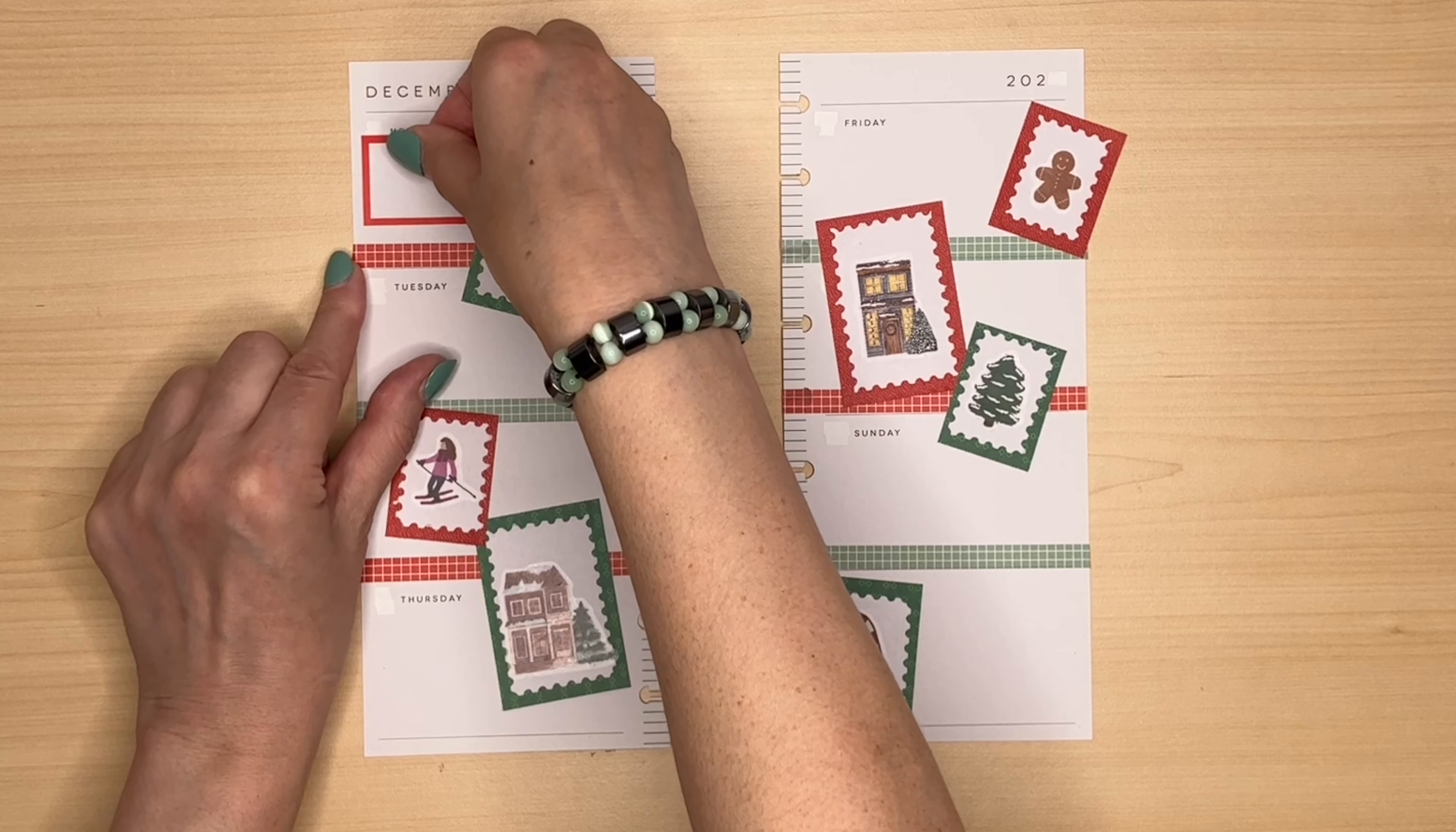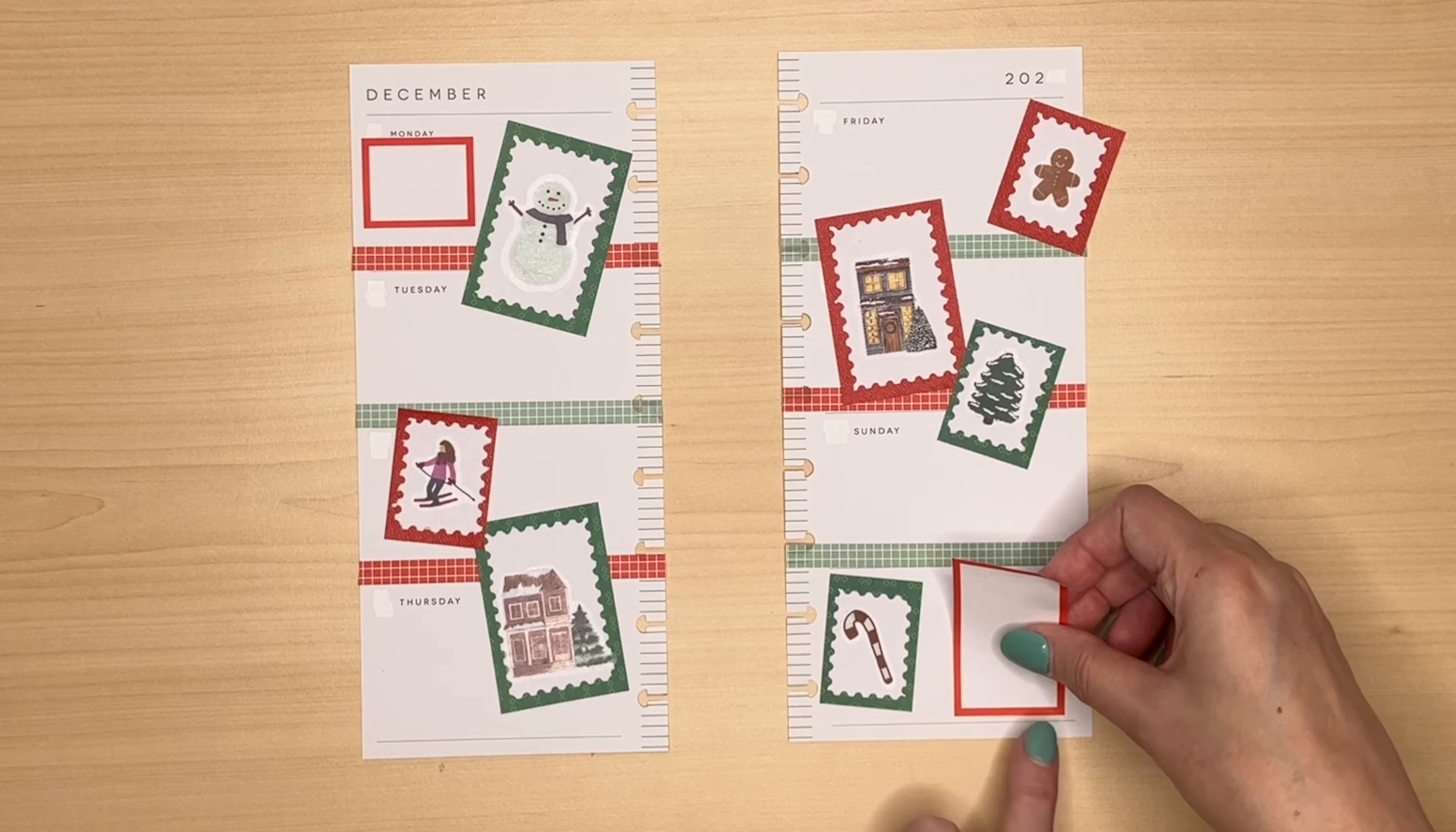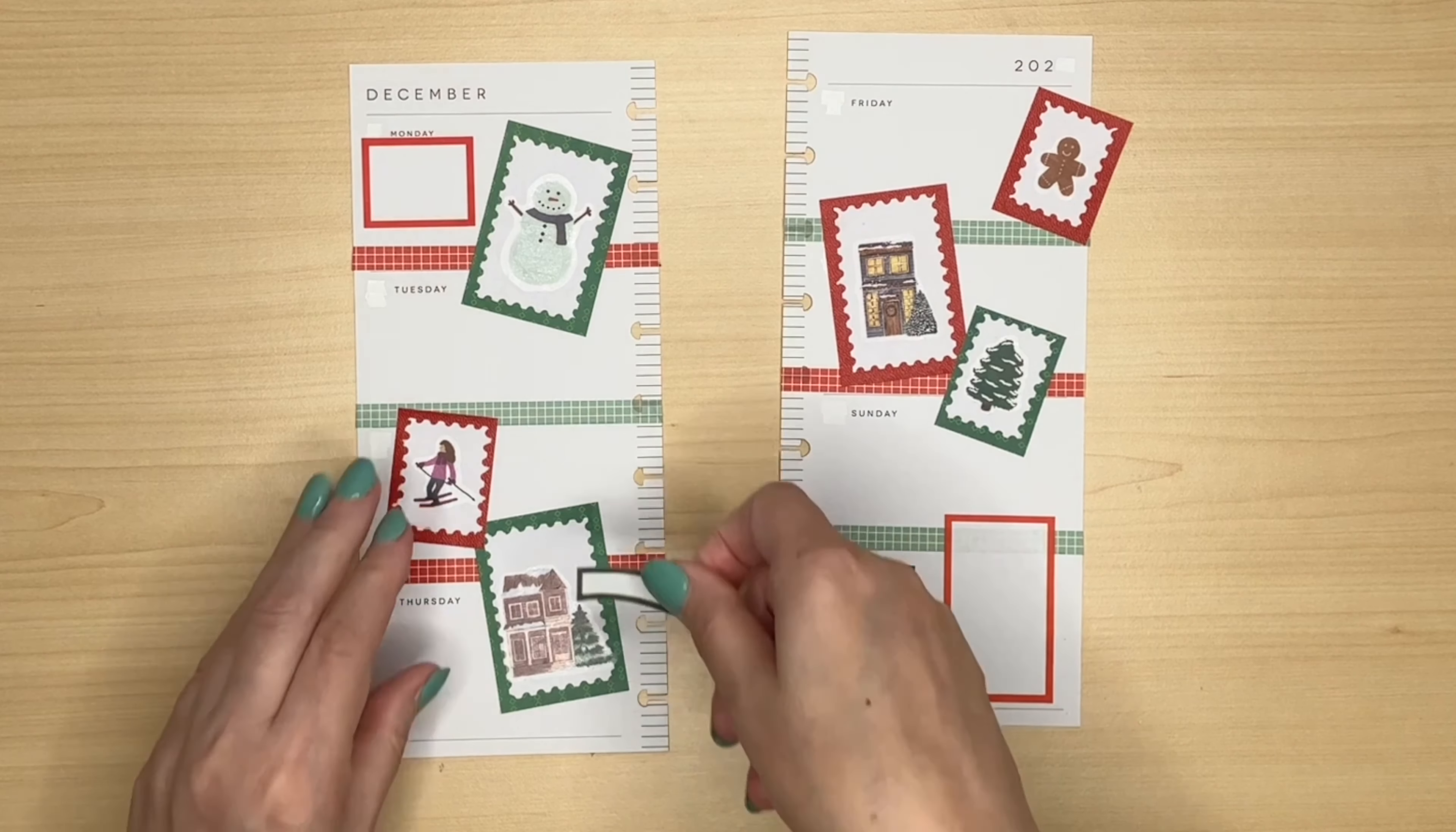I'm sticking this gingerbread man stamp over the edge of the page and I'll cut it off. All I'm going to do now is add a few boxes and we'll be more or less done. I want to keep it fairly simple. The most complicated part was making the stamps at the beginning.